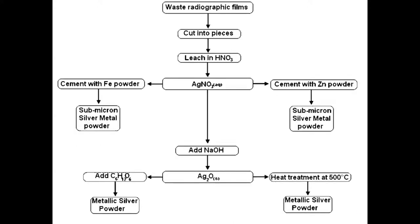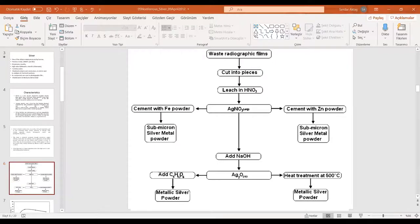Today I'm going to talk about a case study. The name of the paper is submitted to the Canadian Metallurgical Quarterly — one of the best journals in terms of hydrometallurgy and metallurgical processes. The name of the paper is: 'Silver recovery from waste radiographic films by cementation and reduction.' When I was at Istanbul Technical University, together with Dr. Morzula and Professor Yuzo, we carried out this research.